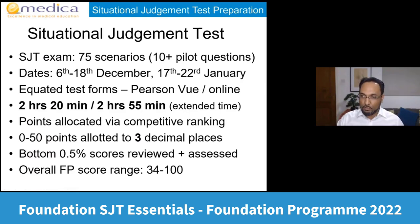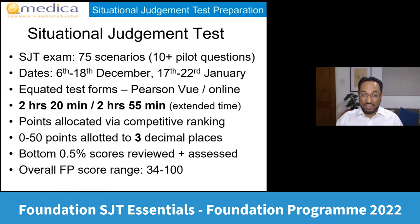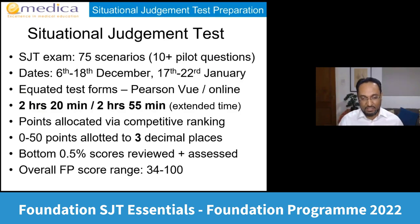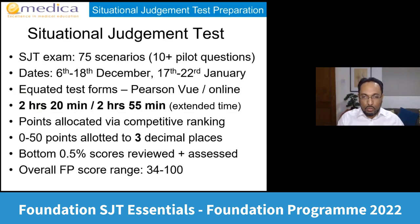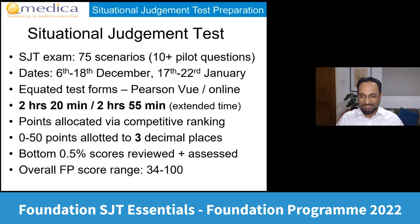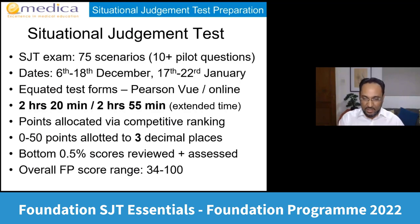It's not going to happen to any of you because you're already thinking far ahead by giving up an evening to come to this. Overall, your total FPAS score is between 34 and 100 — not 0 to 100. No one gets less than 34 for the EPM, so no one can get zero as a total score.